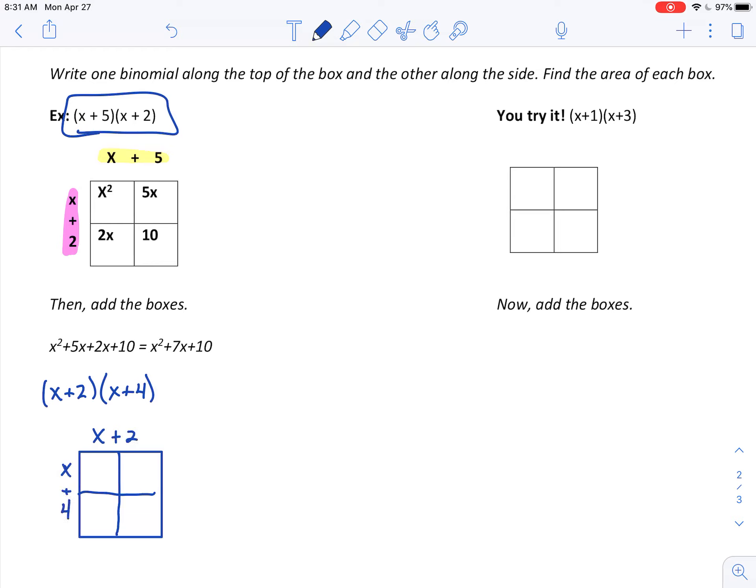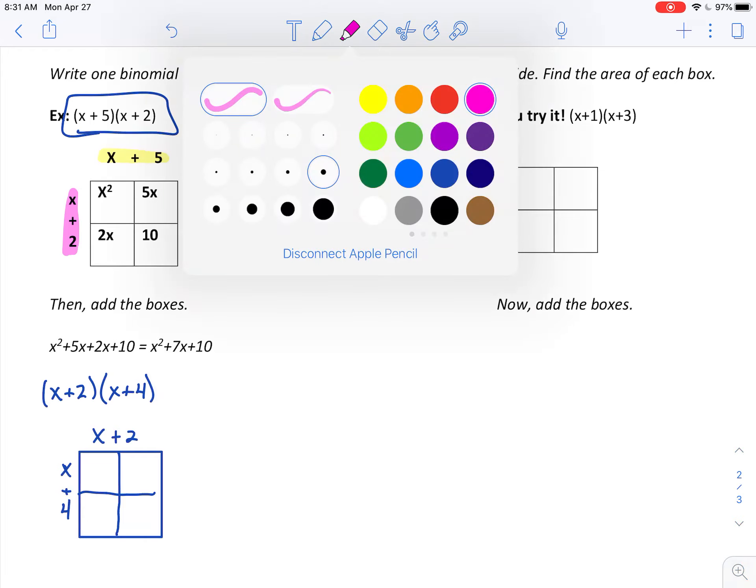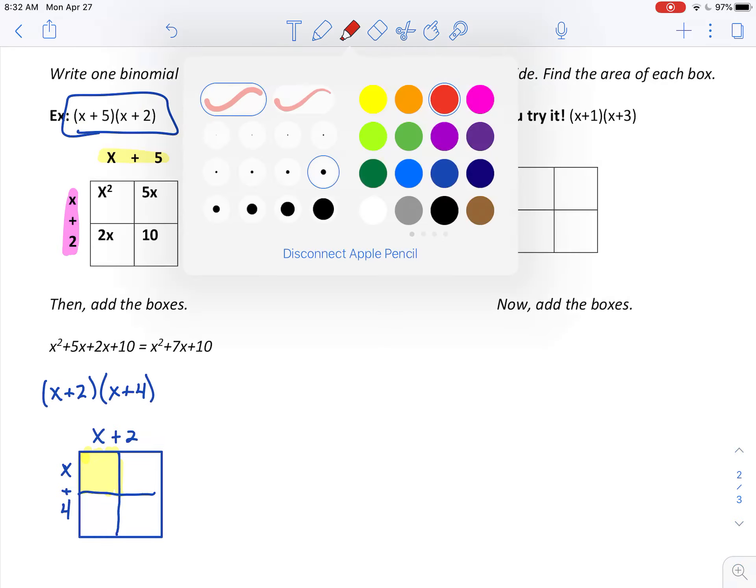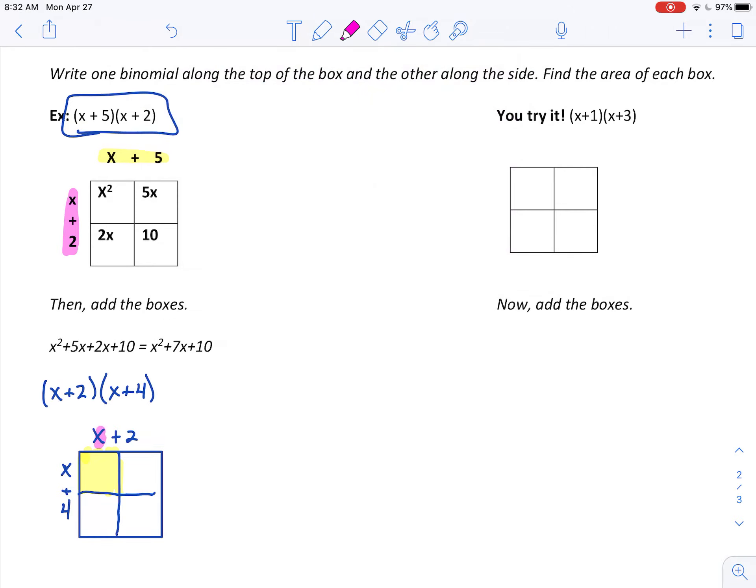And what we're doing is we're writing one binomial along the side and one binomial along the top. So one along the side and one along the top here. And then you're going to find the area of each box. So let's see, x plus 2, x plus 4. And it really doesn't matter which order you put it in.